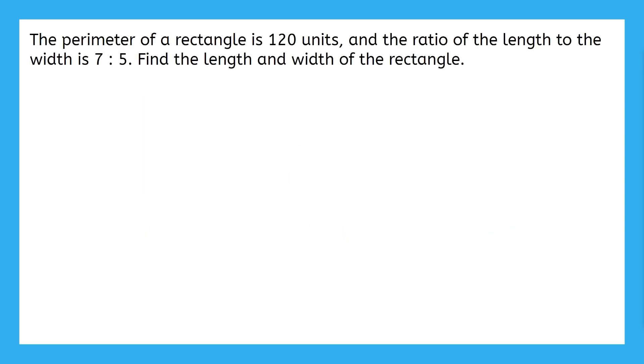Here's our first example problem. It says, the perimeter of a rectangle is 120 units, and the ratio of the length to the width is 7 to 5. Find the length and width of the rectangle. You can see here that a ratio only has two numbers. And that's all we need. Since the perimeter of a figure means the sum of all of its sides, we can draw a picture for this problem to help us visualize all of them.